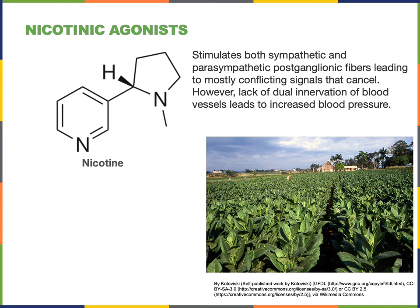However, there are some organs that do not have dual innervation. For example, most of the blood vessels in the body are only innervated by the sympathetic efferent fibers. And therefore, one of the effects of nicotine in the body is to increase blood pressure by stimulating vasoconstriction in the blood vessels throughout the body.